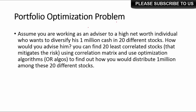Portfolio optimization is another project. It's used to find the optimal weights to assign to different assets in a portfolio — how much of each asset class you should hold. For example, assume you are working as an advisor to high-net-worth individuals who want to diversify $1 million into 20 different stocks. How do you select 20 profitable stocks out of, say, 1,000 listed stocks? You should also ensure those 20 stocks are least correlated — if they are all correlated and one does badly, all of them will do badly.